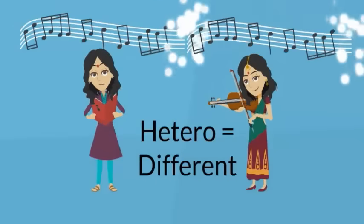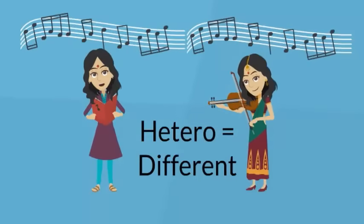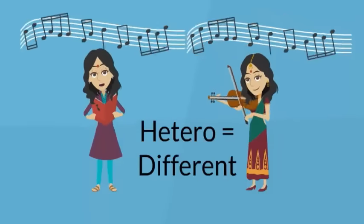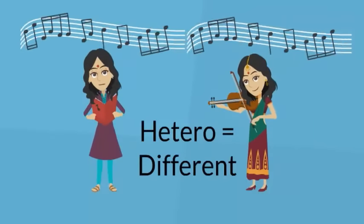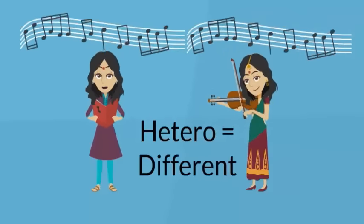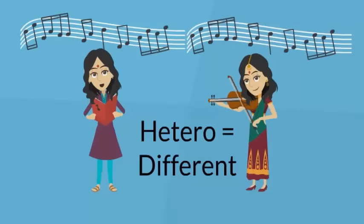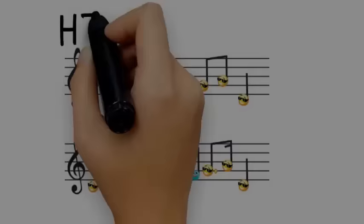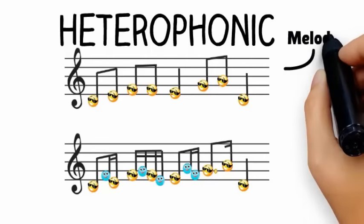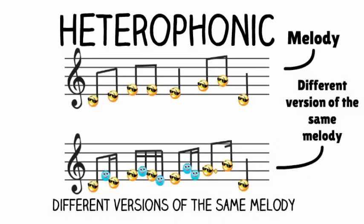The last texture is called heterophony. Heterophony is relatively rare in Western music but is very common in non-Western music. It occurs when there are two or more versions of the same melody happening at the same time. Usually, one of the melody lines has more notes than the other — a kind of musical decoration — and or a slightly different rhythmic pattern.